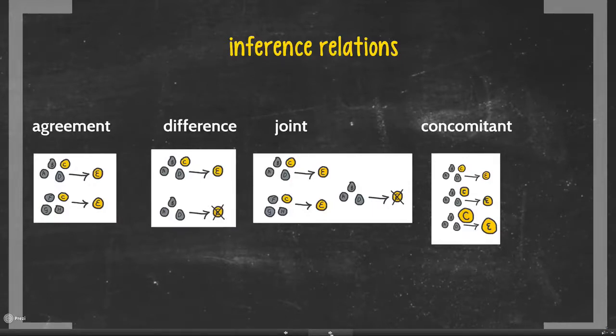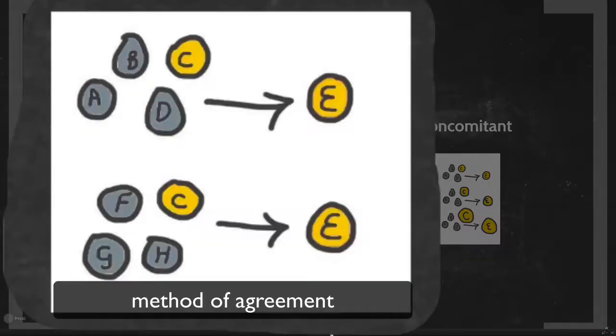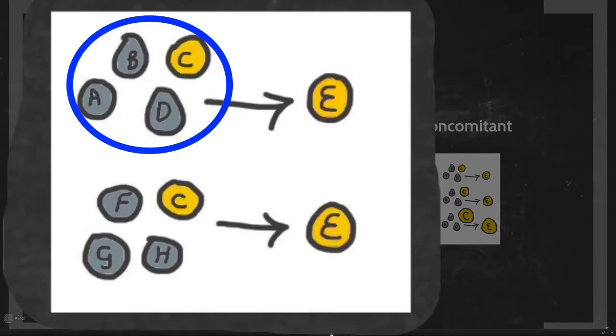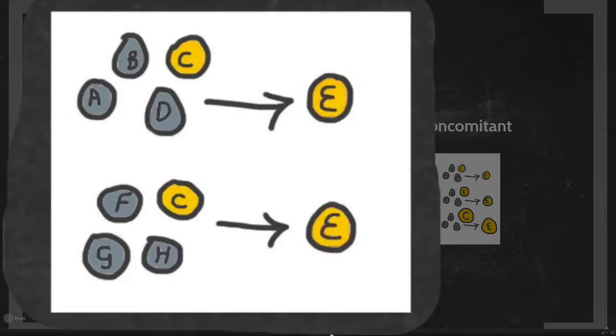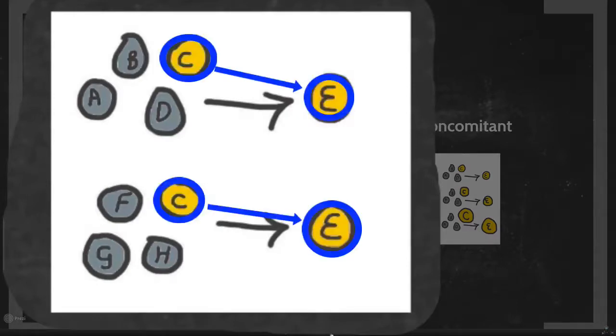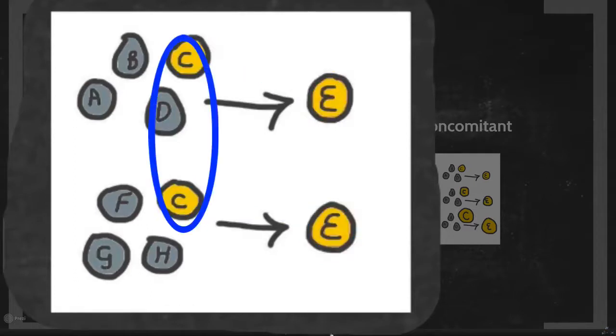The first one is one of agreement, and you can see it very simply. If you have a situation where you have four things happening, A, B, C, D, and something like E then happens, and then another set of situations happens where you have F, G, H, and C happening, and then E happens again. Well, you can make an assumption that it's the C which has caused the E to happen. So there's agreement between the first and the second around C.